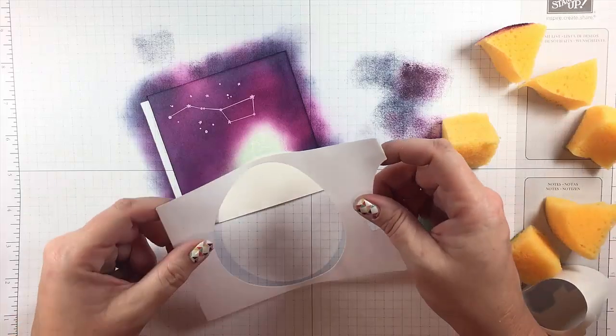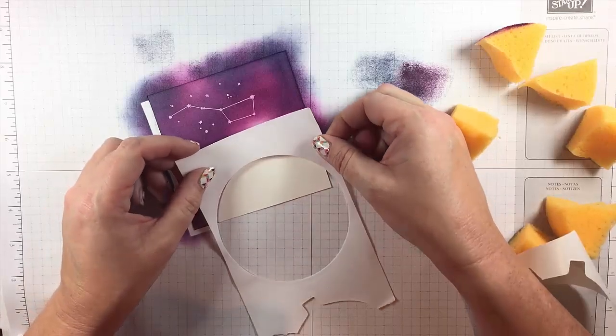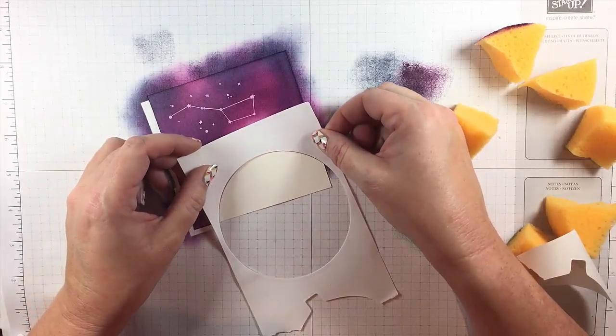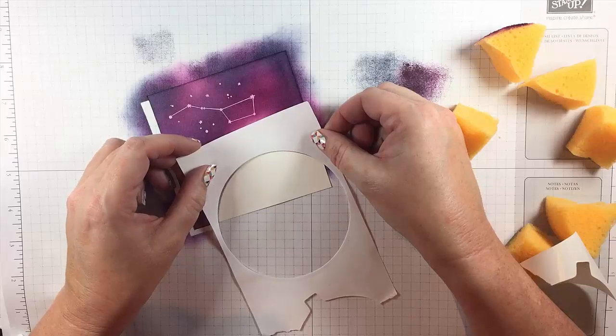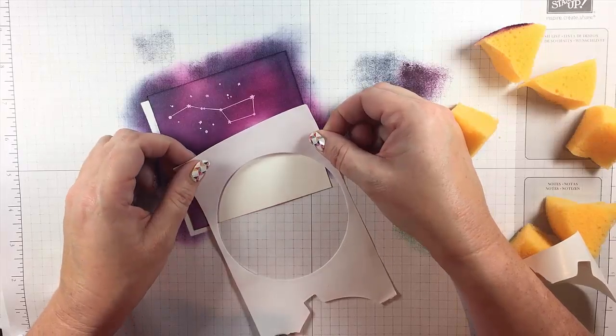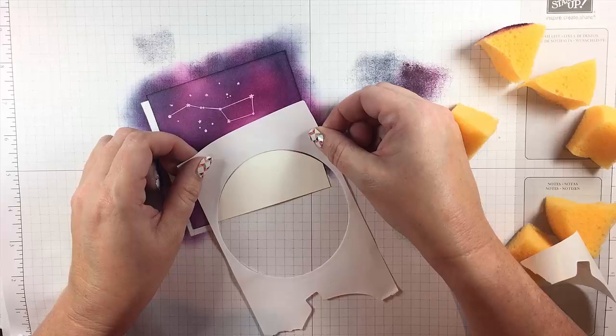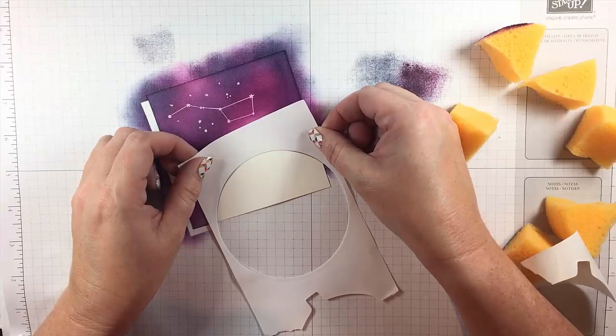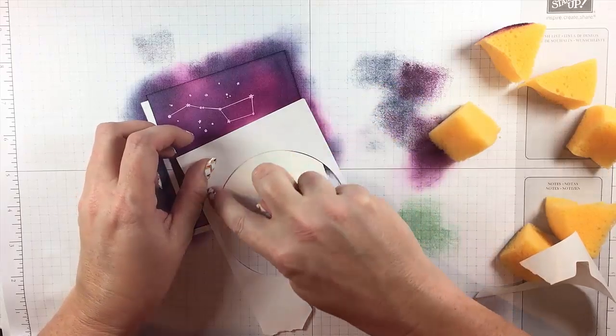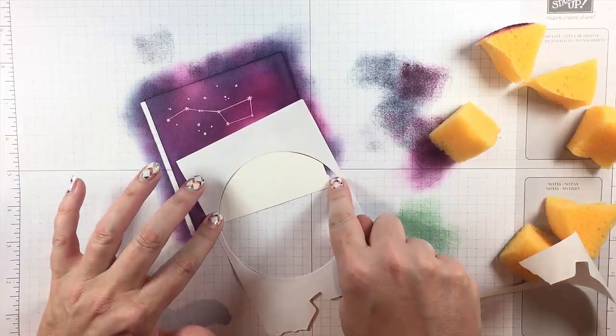I think I'm going to put the fat side up just so I don't accidentally get any sponging in the sky. And I'm positioning it just a little bit above the shape that I masked earlier just because I don't want a white edge at the end of the earth, so it's okay if my sponging goes a little bit into that sky area.